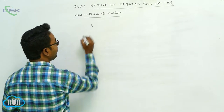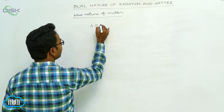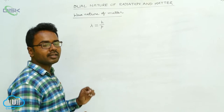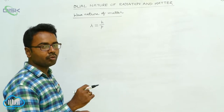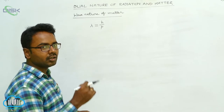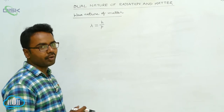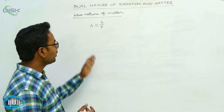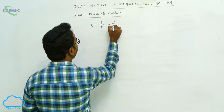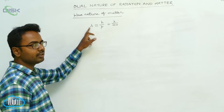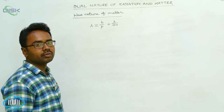The wavelength associated with the moving particles is given by, according to De Broglie, lambda is equal to h by p. This is the expression for the wavelength associated with moving particles. The waves associated with moving particles are called matter waves. Here, lambda is the wavelength of matter waves, h is Planck's constant, and p is momentum. It is also given by lambda equals h by mv, where m is the mass of the particle and v is the velocity of the particle.